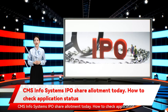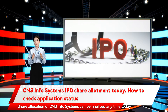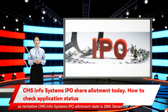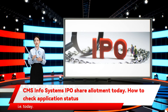CMS InfoSystems IPO share allotment is today. Share allocation of CMS InfoSystems can be finalized anytime today, as the tentative CMS InfoSystems IPO allotment date is December 28, 2021, i.e. today.